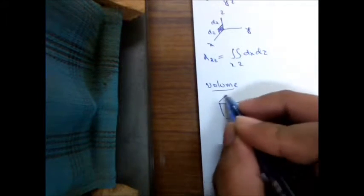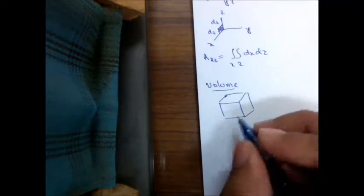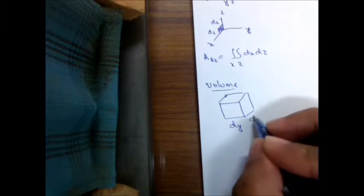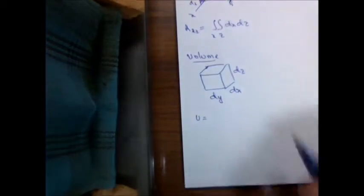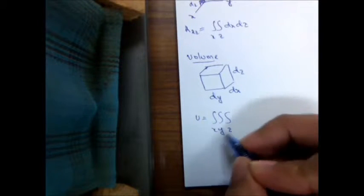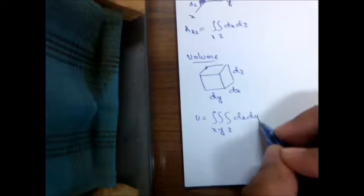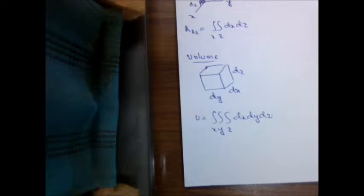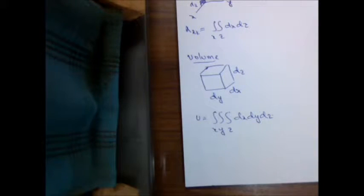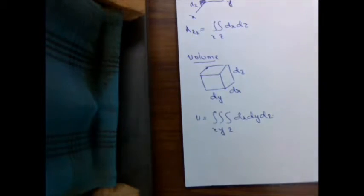The volume of a cube in Cartesian coordinate systems can be calculated using small incremental lengths dy along the y axis, dx along the x axis, and dz along the z axis. The volume can be calculated as a triple integral along x, y, and z, which gives the volume of a cube in Cartesian coordinate systems.